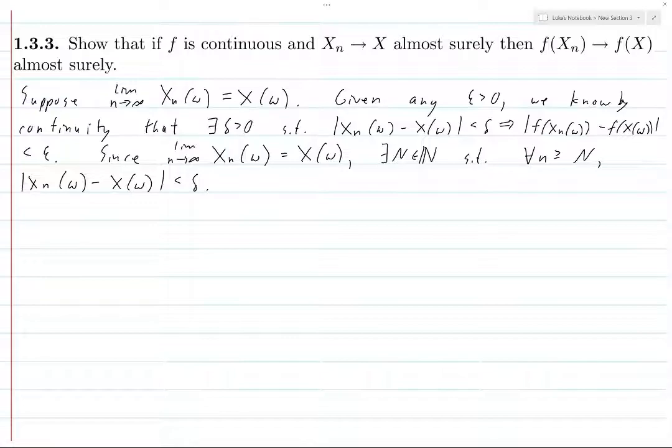That's what it means for the limit as n goes to infinity of x_n omega to be x of omega. And so, instead of choosing N so that it's less than an arbitrary epsilon given, we choose N, or we know that there is a natural number N such that this distance is less than this particular delta that we've taken from the previous sentence.